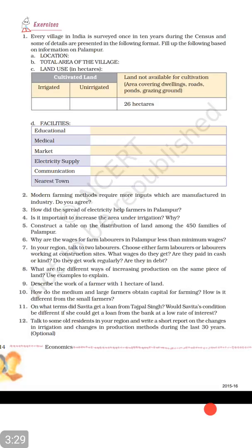Aaj ka current affairs ka question: Jo state sabse pehle 30th April tak lockdown ko badhaane wala tha, woh Odisha hai. Yeh aaj current affairs mein humne padha. Par uska CM kaun hai, Odisha ka, aur Governor kaun hai? Yeh aap mujhe message mein zarur bataiye — who is the CM and Governor of Odisha?